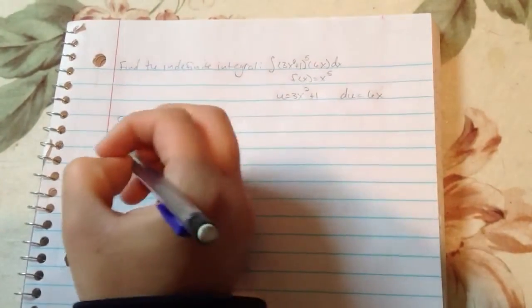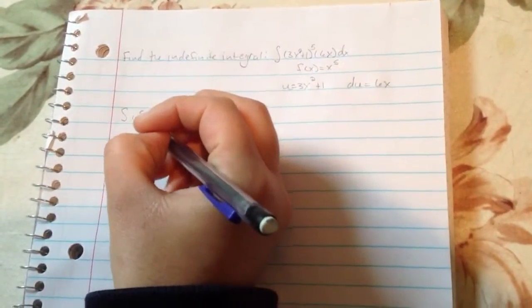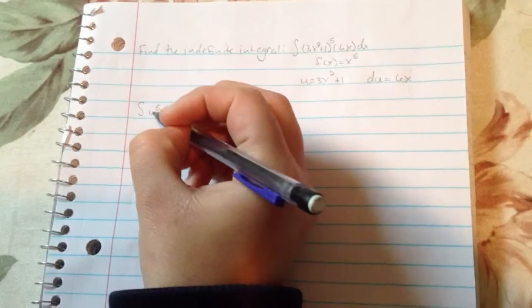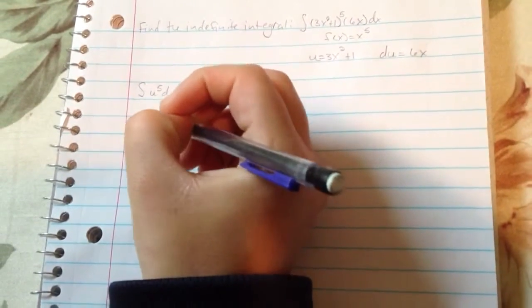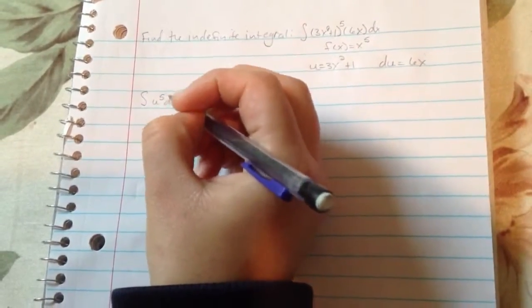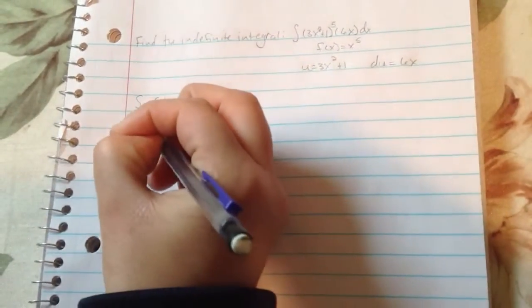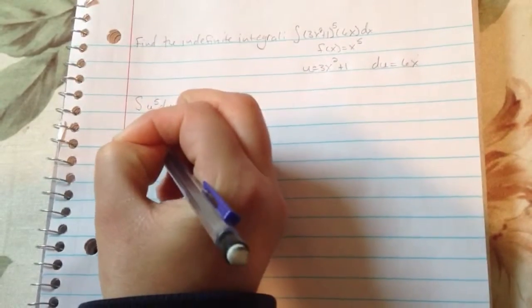And then we're going to integrate it. So in this case, basically we're doing everything backwards. So we know that this is going to be 5 plus 1 over 5 plus 1. So it would be u to the 6th over 6.